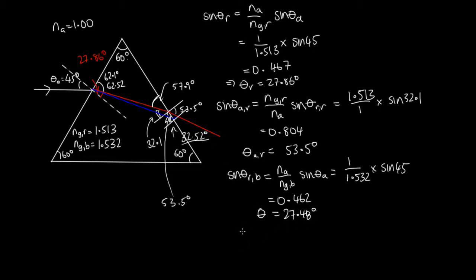So we've got that sin θ in the air for the blue light is equal to the refractive index for blue light over the refractive index for air times sin θr for blue light, which is this 32.52. So this is equal to 1.532 over 1 times sin of 32.5 degrees. And solving that, we end up with this is equal to 0.8236, which gives us θa for the blue light. So the angle that it makes in air is 55.44 degrees. And so it's going to come out at a slightly larger angle to the normal than the red light.